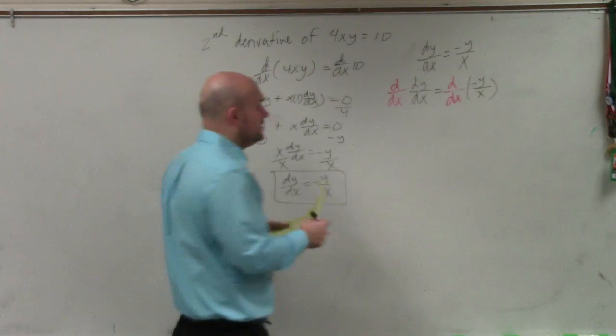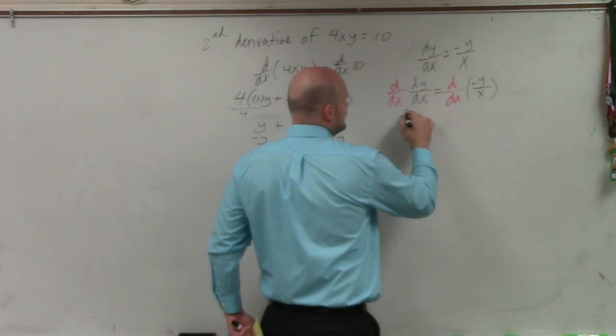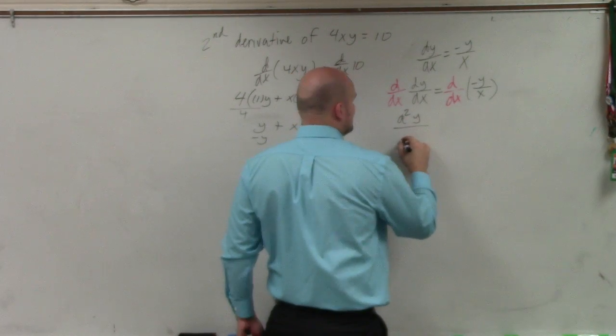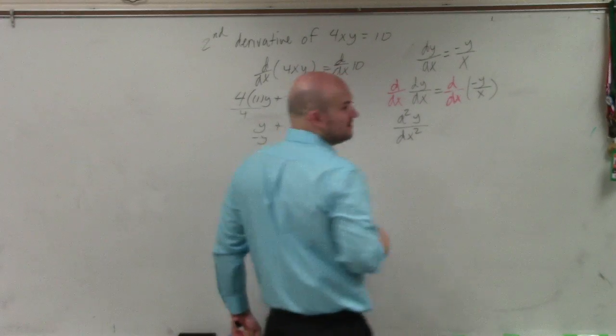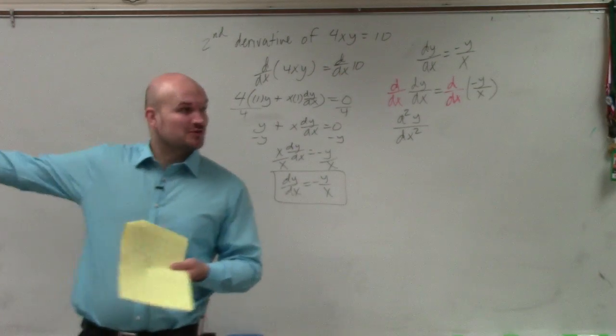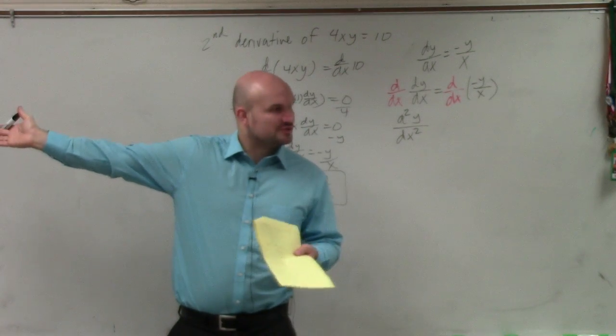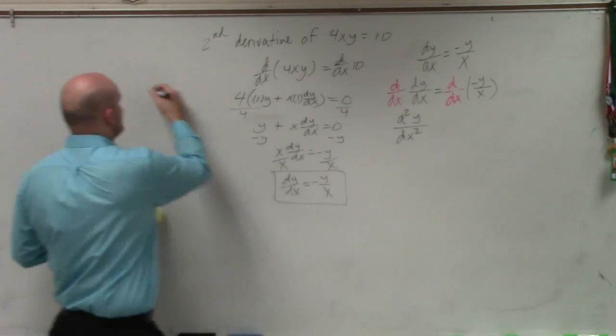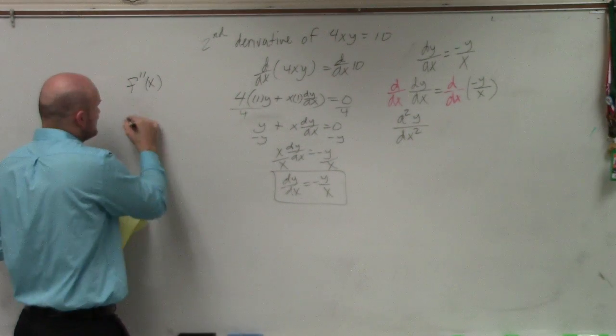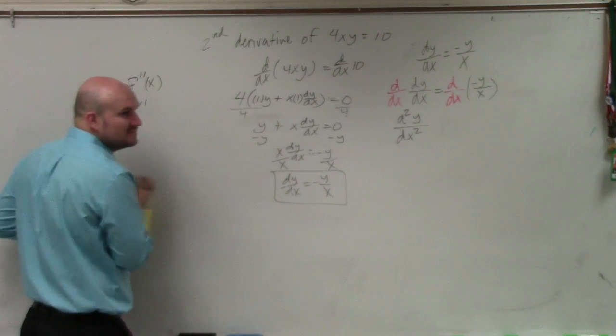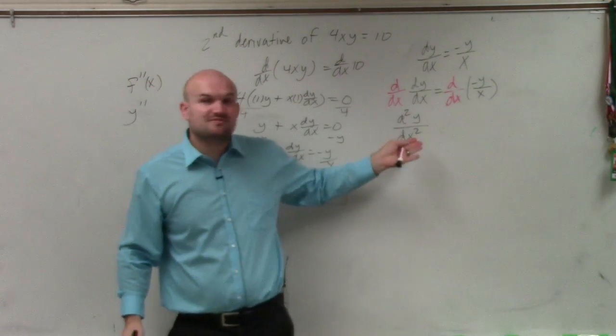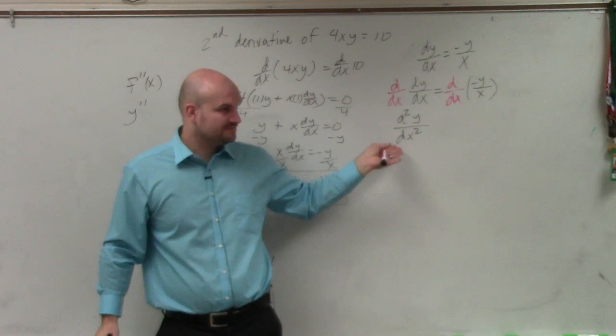What happens when I do the second derivative here, what I get is d squared y over dx squared, which, if you guys remember in my notes, was one of those ways to represent the second derivative. Basically, that's the same thing as f double prime of x or y double prime. This is just another way of saying, oh, here's the second derivative.